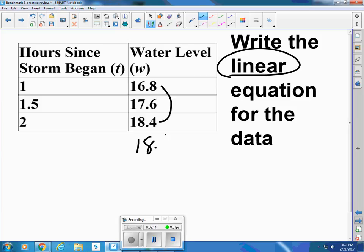So 18.4 minus 16.8 is an increase of 1.6. So I know that my water level is going to be 1.6 higher every hour, plus however high the water was an hour before.